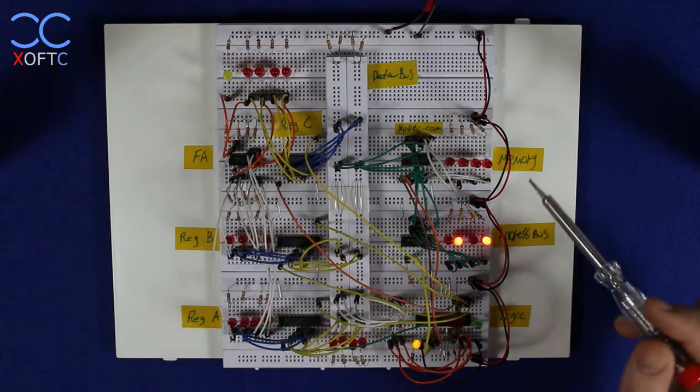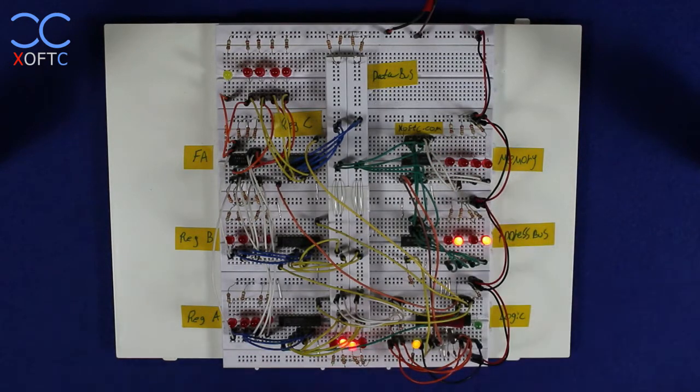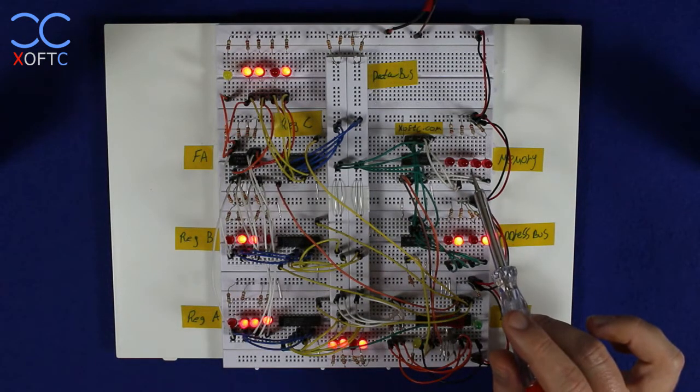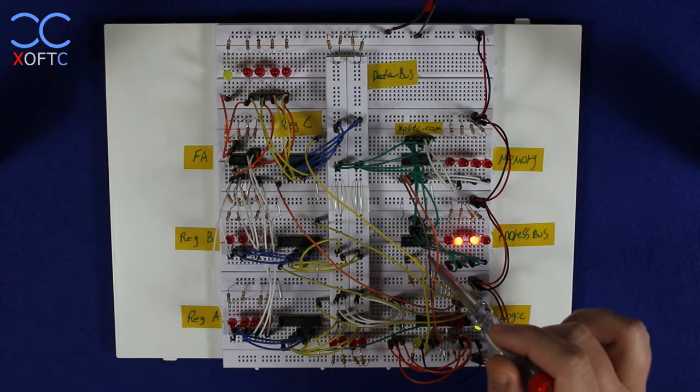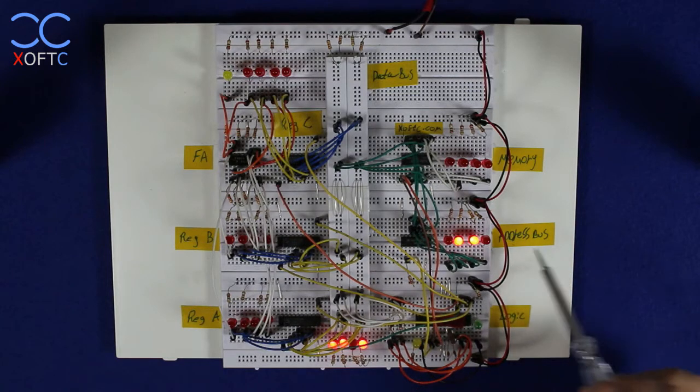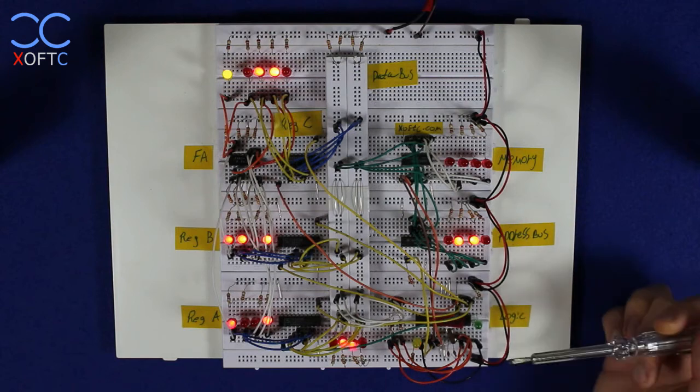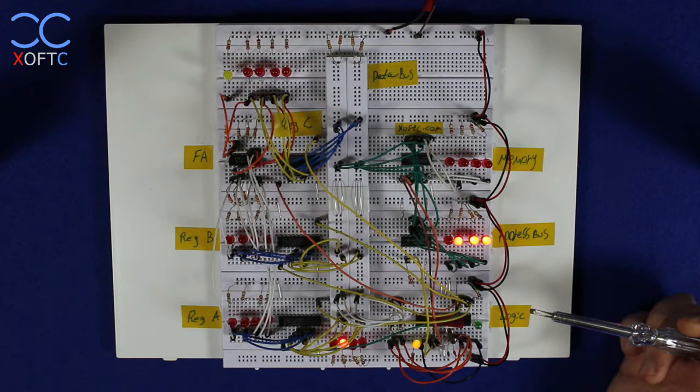From here we can see that we have a memory. It's a 16-word 4-bit memory, just a very simple chip, and we are writing the value into the memory and then we are reading it. And we have a 4-bit binary counter which represents our address bus so that we can address different addresses, where we want to write it and where we want to read from.